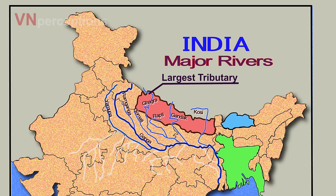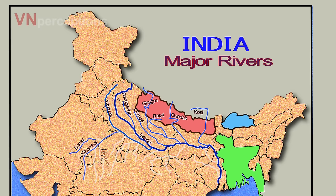The rivers joining Yamuna from the south are Chambal. The tributaries of Chambal are Banas, Parbati and Kali Sindh. The other tributaries of Yamuna are River Sindh and Betwa. The tributary of Betwa is Dhasan. Then there is Ken and Tons.